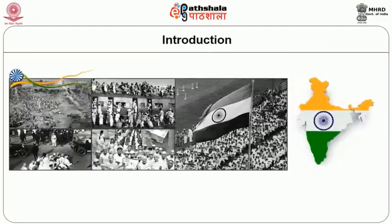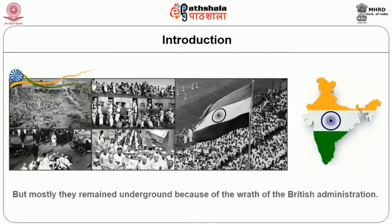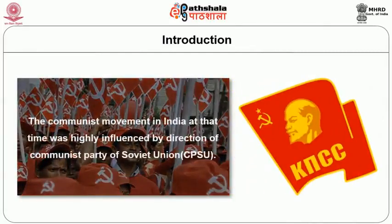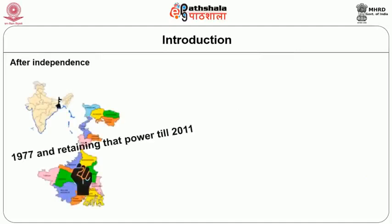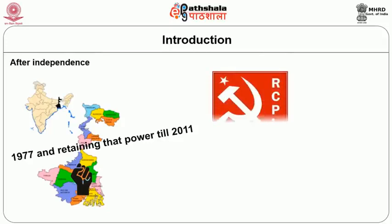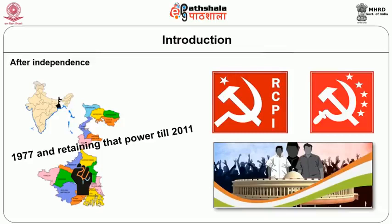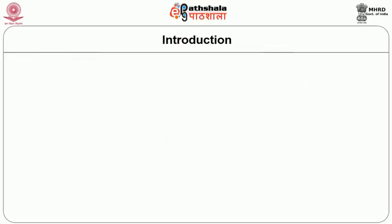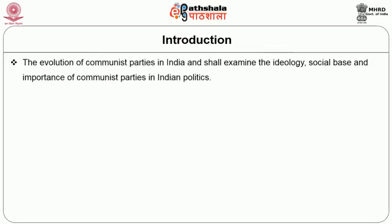In the evolution of Indian freedom struggle, the communist movement developed in India, but mostly they remained underground because of the wrath of the British administration. The communist movement in India at that time was highly influenced by the direction of the Communist Party of Soviet Union. After independence and particularly after gaining power in West Bengal in 1977 and retaining that power till 2011, the communist parties of India became important for analysis of Indian politics. In this module, we shall focus on a brief account of the evolution of communist parties in India and shall examine the ideology.